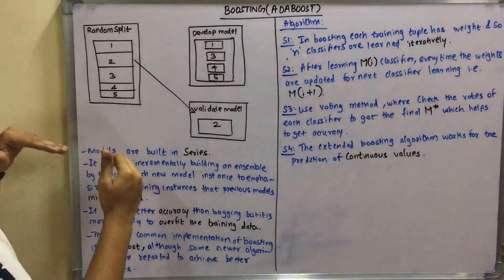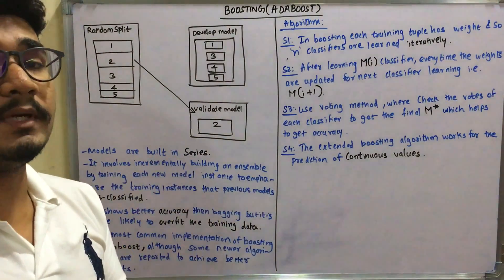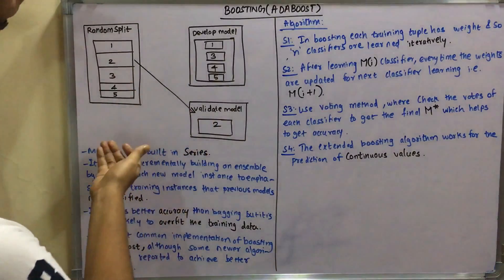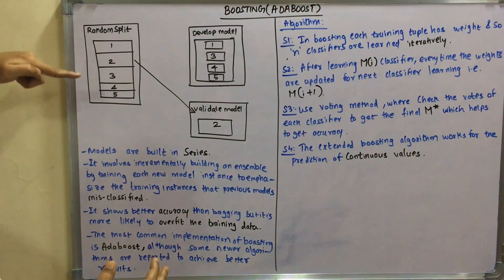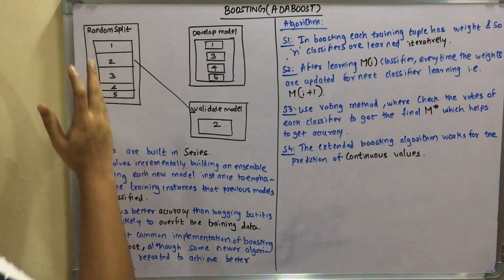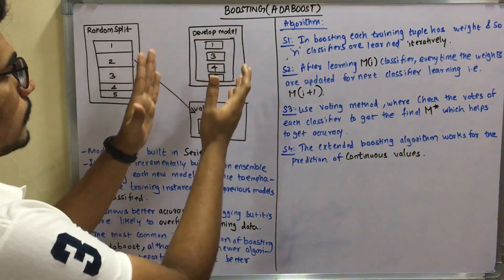For example, you have a training set of data, you have the random split. Consider you have one, two, three, four, five values. What you do is develop a model from that initially.